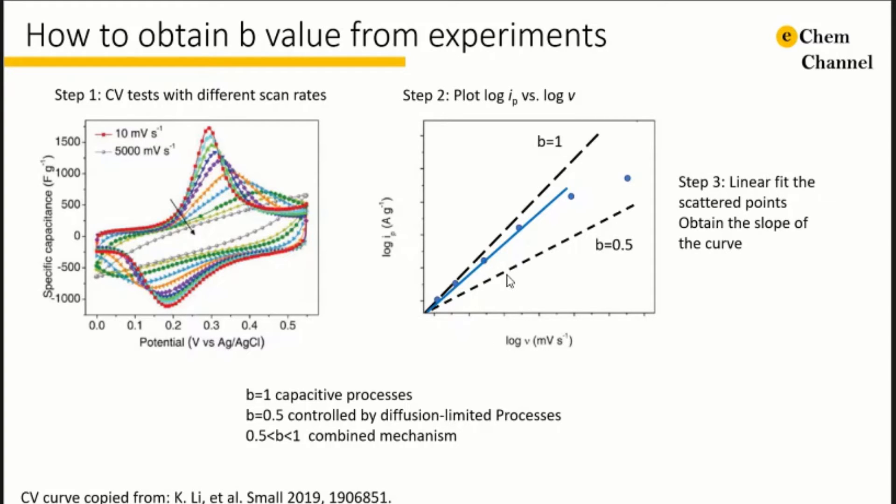Although this method has been widely used to find the charge storage mechanism, a plot like this usually only gives a straight line in a very small scan rate range. When increasing the scan rate, the slope of the curve will be smaller and smaller. That is because the scan rate will catch up and finally be larger than the diffusion rate. Even for a supercapacitor, for example, 100 volts per second, the b value will not be 1 anymore. So in order to obtain the b value, we always fit the points of relatively smaller scan rates.